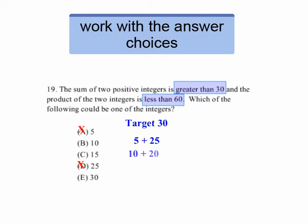If we look at 10, 10 plus 20 equals 30. But 10 times 20 is 200. And if we look at 15, 15 plus 15 equals 30. But 15 times 15 is way past 60.